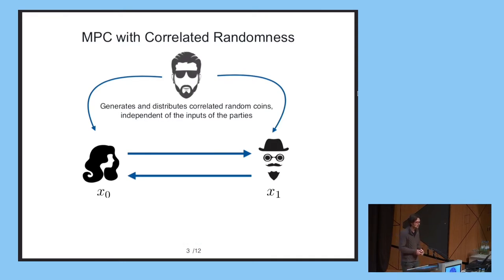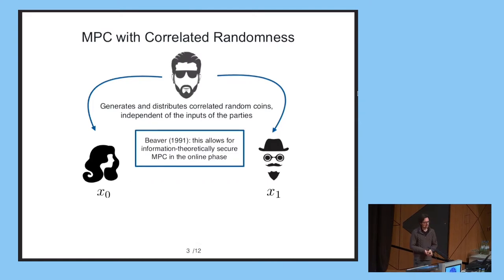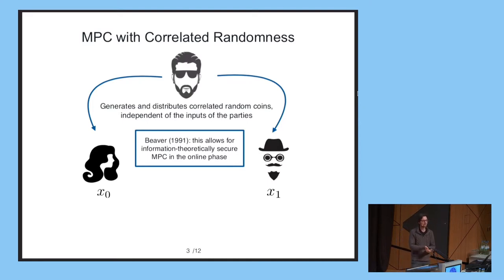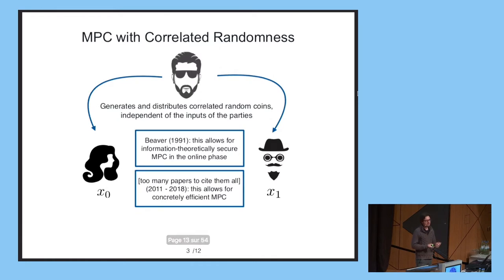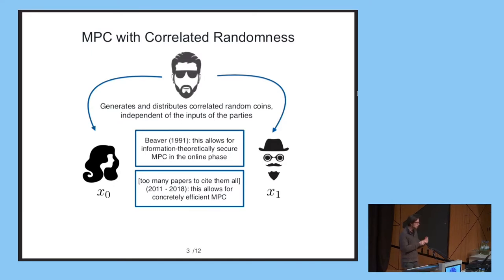Why do we care about this model? There are two main reasons. First, as was shown by Beaver in 1991, allowing a trusted setup that distributes correlated random coins to the parties enables information-theoretically secure computation in the online phase. This is in stark contrast with standard secure computation without a setup, which obviously requires computational hardness assumptions. The second reason is that it leads to extremely efficient — concretely efficient — secure computation protocols. Almost all modern secure computation protocols that aim at being concretely efficient work in this model.